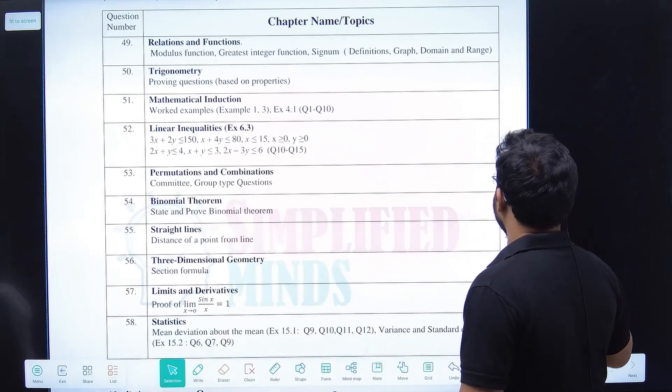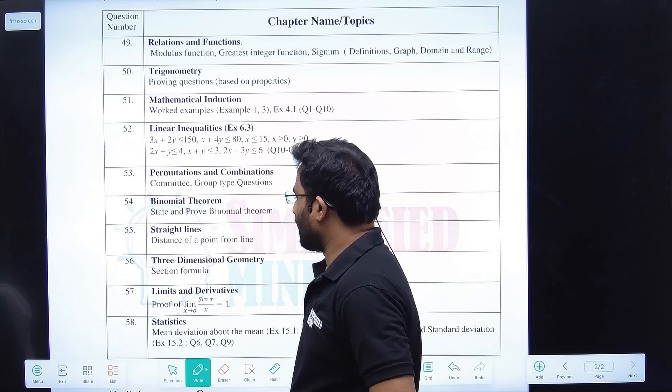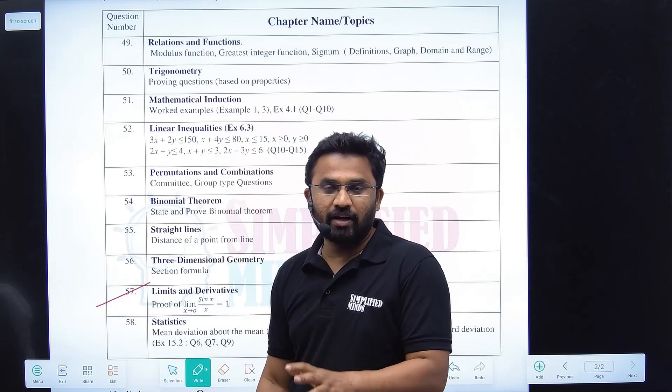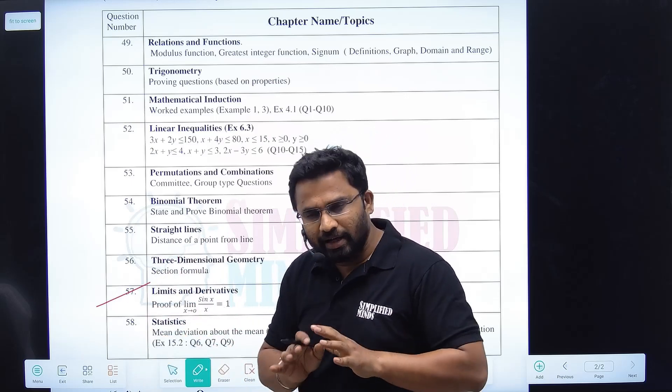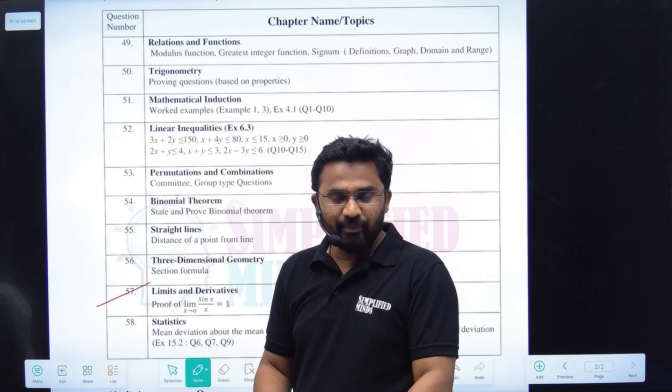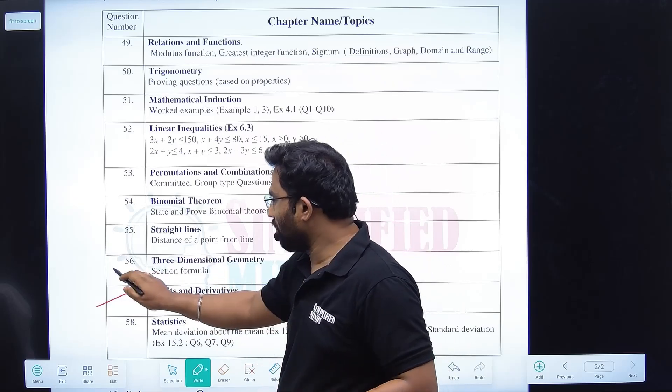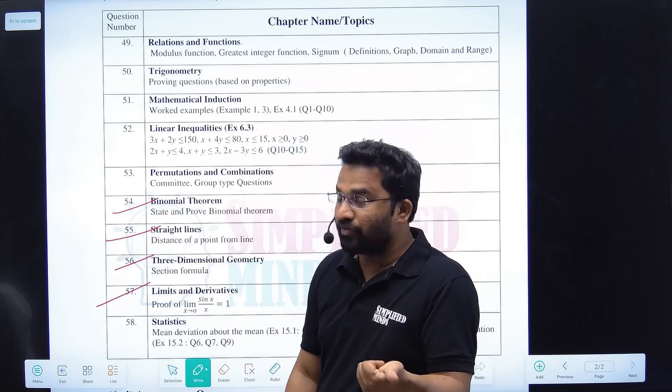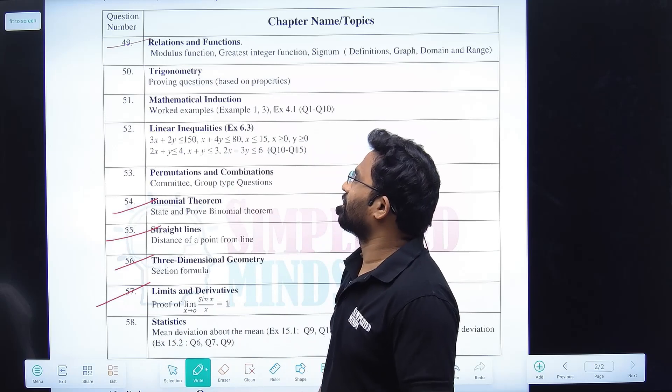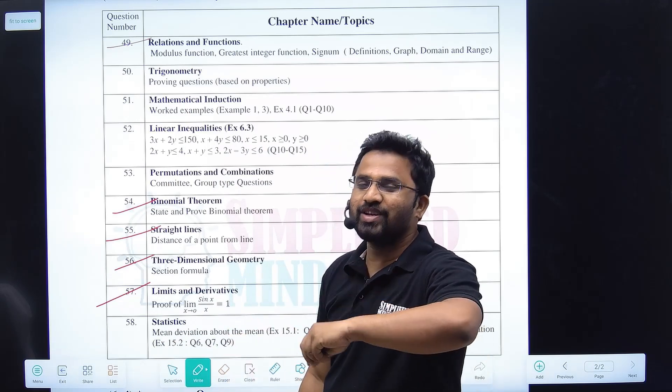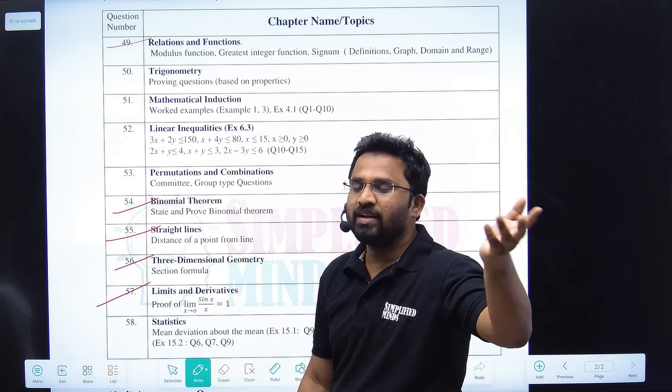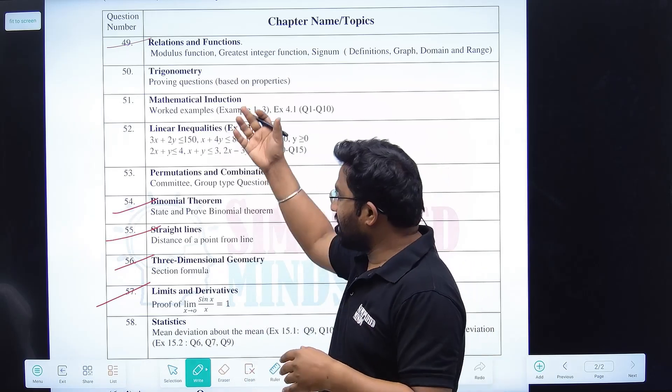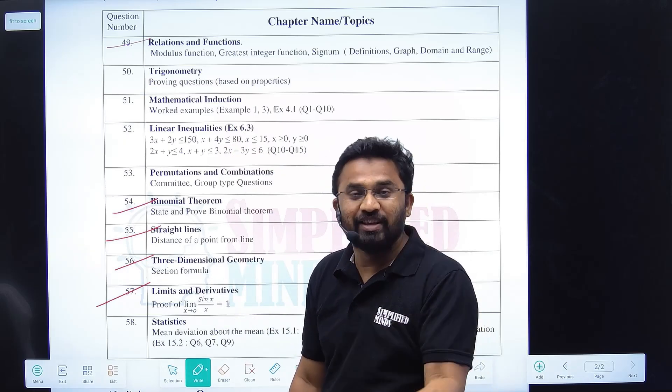Look at here now, this is one of the most important question. Derivations - section formula is a derivation, distance of a point from a line is a derivation, state and prove binomial is also a derivation. This is also a derivation - five marks, almost all derivations. There are no questions, only derivations actually. This won't happen usually - in CBC exam papers they won't give only derivations, they'll give more questions to calculate. But here you literally have five marks derivation.